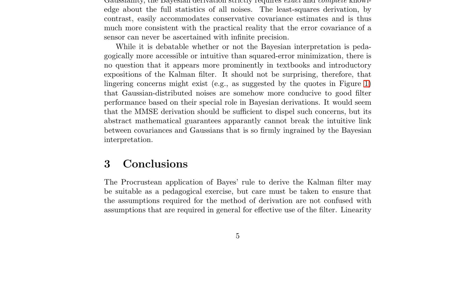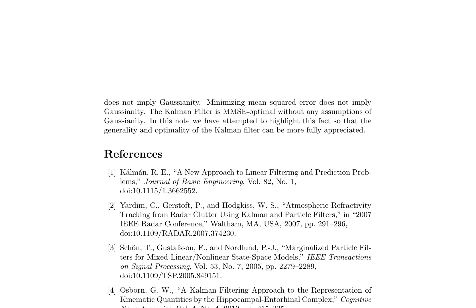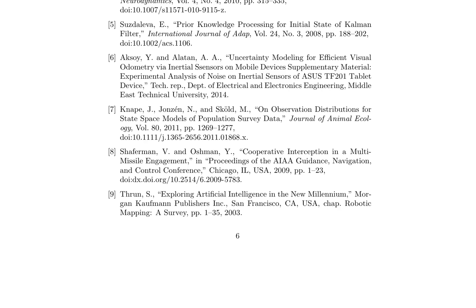This is shown through the Chapman-Kolmogorov equation, which describes the prediction step of the filter, and Bayes' rule, which describes the update step. The filter's optimality is not dependent on Gaussianity, but rather on the linearity of the system. The authors also discuss the limitations of the Bayesian interpretation, which requires exact and complete knowledge of the full statistics of all noises. In contrast, the least squares derivation of the Kalman filter can accommodate conservative covariance estimates and is more consistent with real-world applications, where the error covariance of a sensor can never be ascertained with infinite precision. The paper concludes by emphasizing the importance of distinguishing between the assumptions required for the method of derivation and those required for effective use of the filter, dispelling the misconception that Gaussianity is necessary for good filter performance.